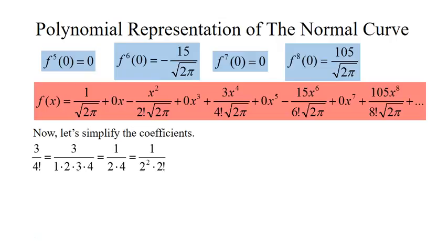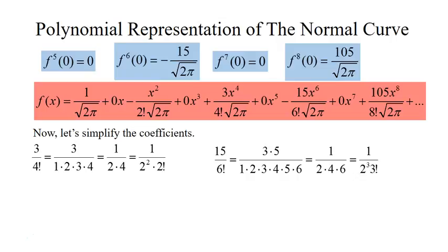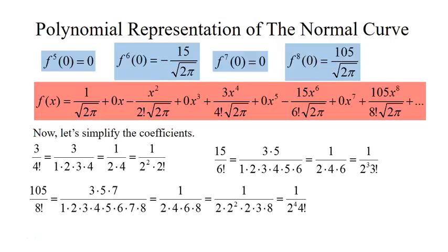We can simplify the coefficients. Looking at 3 over 4 factorial, the 3's cancel and it can be written as 1 over 2 squared times 2 factorial. The 15 over 6 factorial simplifies — the 3 and 5 cancel — giving 1 over 2 cubed times 3 factorial. The 105 over 8 factorial simplifies to 1 over 2 to the 4th times 4 factorial. So the pattern is 2 to the n times n factorial in the denominator. We're alternating in sign, so we use negative 1 to the n. Since we only have even-powered terms, the exponent of x is 2n.